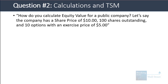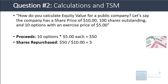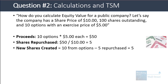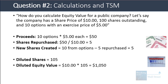Let's walk through the math. These options are in the money because the exercise price of $5 is below the current share price of $10. Employees exercise their 10 options for $5 each, so the company gets $50 in proceeds. Shares repurchased: $50 divided by $10 equals 5. So 10 shares get created, the company repurchases 5, giving 5 net new shares. The diluted share count is 105, and the diluted equity value is $10 × 105 = $1,050.